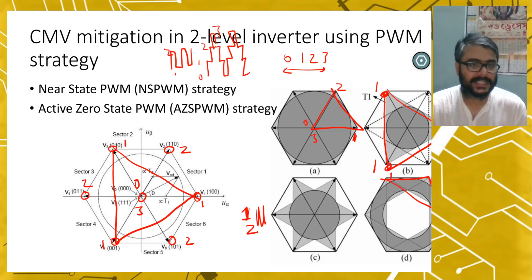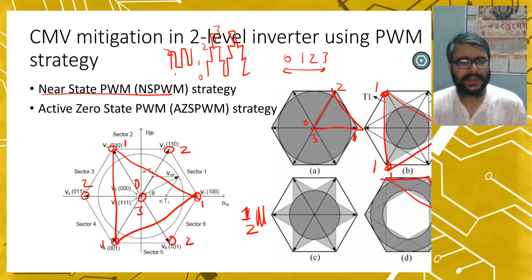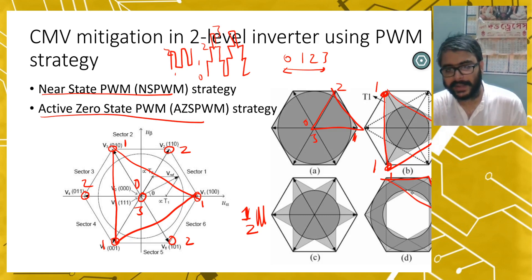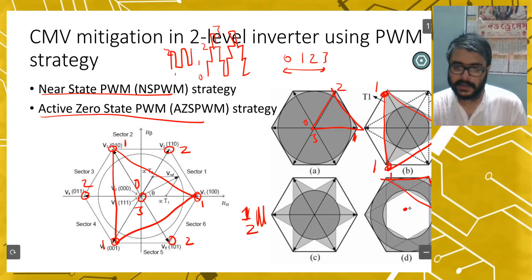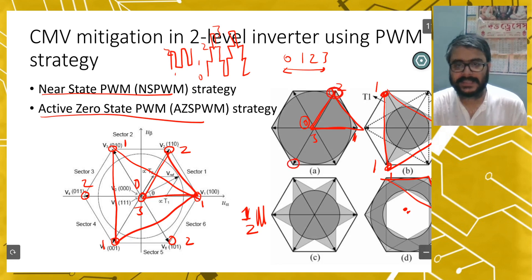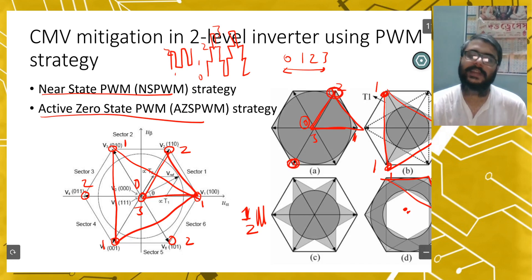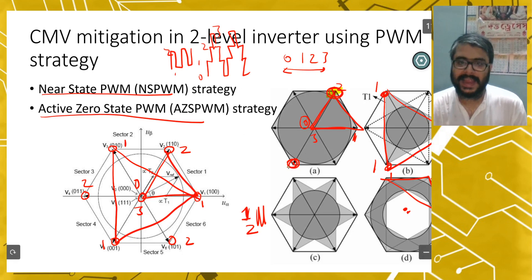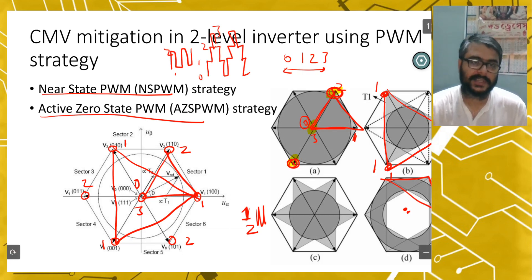In near state PWM, you can only operate in the shaded portion of the hexagon. If the reference falls in the inner portion, instead of using the conventional zero vector, you use two active vectors to implement it. All the outer vectors are called active vectors, and you implement the zero vector using these two active vectors — that's why it is called active zero state PWM.